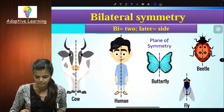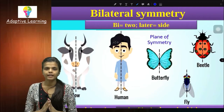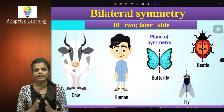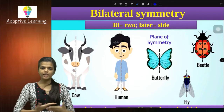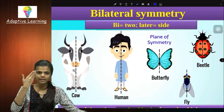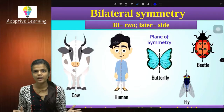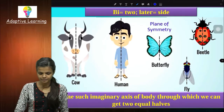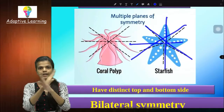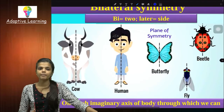And what is bilateral symmetry? 'Bi' means two and 'lateral' means side. We — human beings — cow, butterfly, beetle and fly, they all come into the category of bilateral symmetry. If you cut me like this from this side, will you get equal halves? No. You need to cut from the front — only one imaginary axis will give you two equal halves. In radial symmetry there were multiple planes. In bilateral symmetry there is only one axis that can give equal halves. We are in the category of bilateral symmetry.